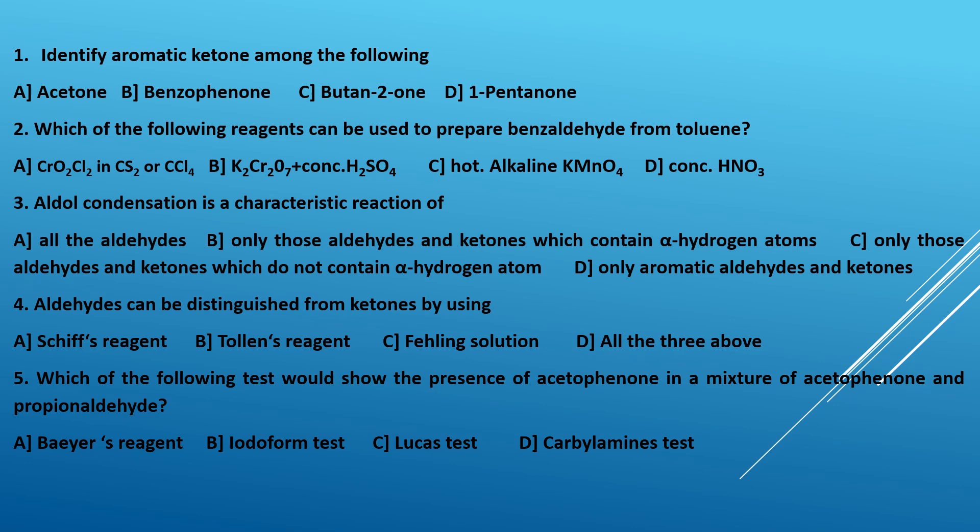Better you take a pen and paper and try to answer these questions on your own. Among all four options, A, C, and D are aliphatic compounds, whereas B is an aromatic compound which consists of a C=O group. Benzophenone, with structure C₆H₅–C(=O)–C₆H₅, is the correct answer.